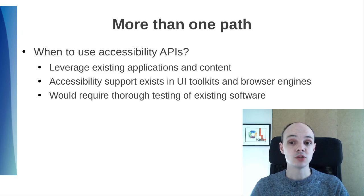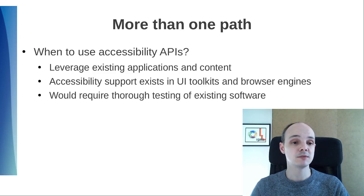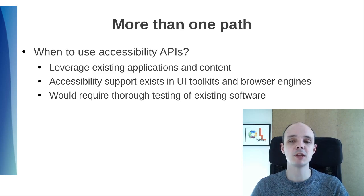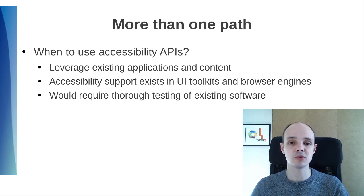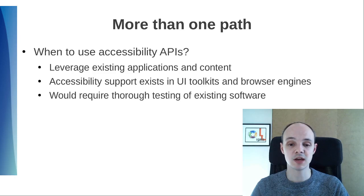We have all those options. When would accessibility APIs be a good fit? I think they are the best path if you have to leverage existing applications and content. Accessibility support is already there in toolkits and browser engines. It would require auditing and testing thoroughly your software, though, to make sure it follows best practices with regard to accessibility, especially web contents.